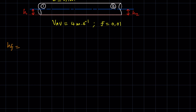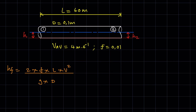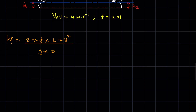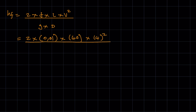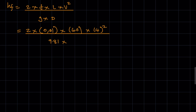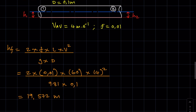We know that HF for the velocity variation of Darcy's formula is equal to 2 times F times L times V squared, over G times D. Looking at what we've been given, we have F, L, V, G, and the diameter. So substituting: HF = 2 × 0.01 × 60 × 4² over 9.81 × 0.1. If you push this into your calculators, you get 19.572 metres. So that's the frictional head loss for this pipe.